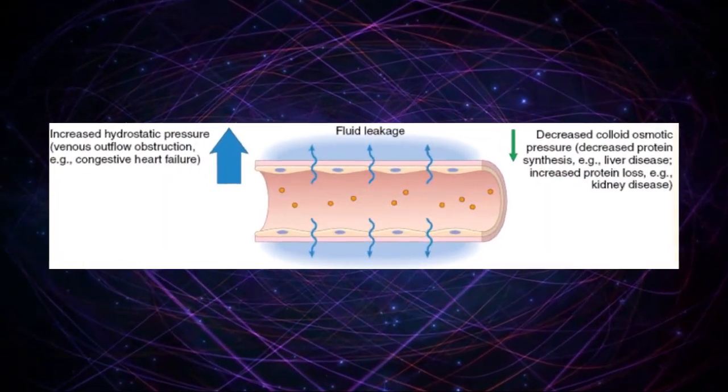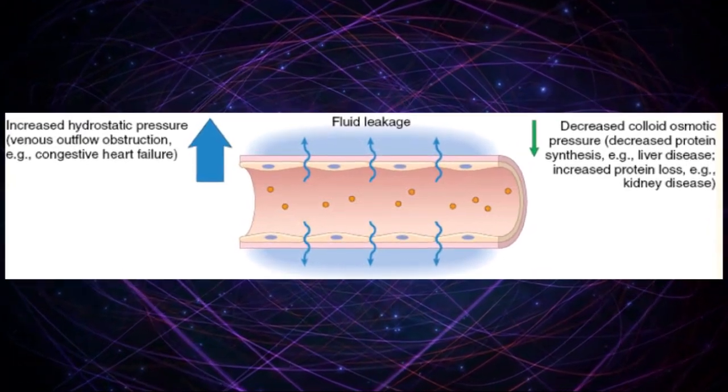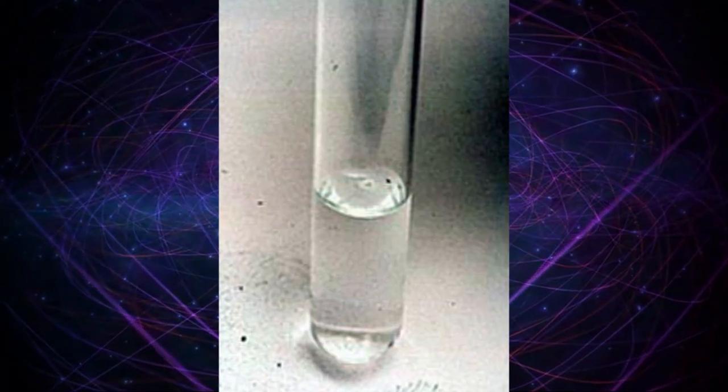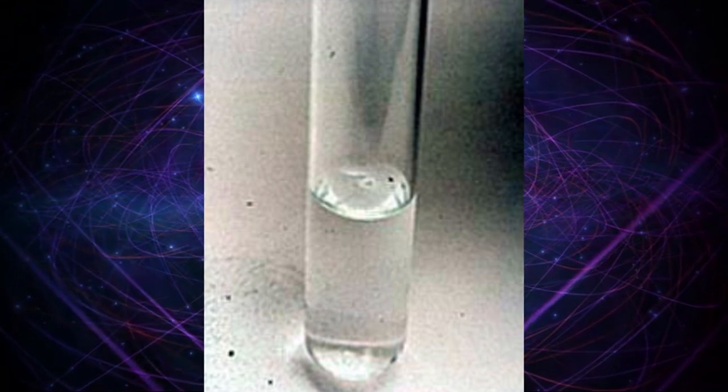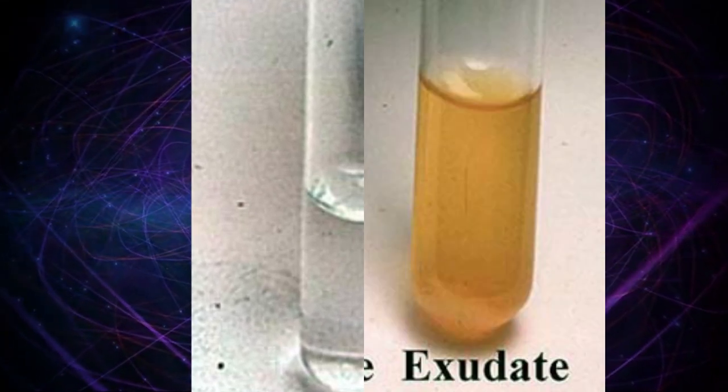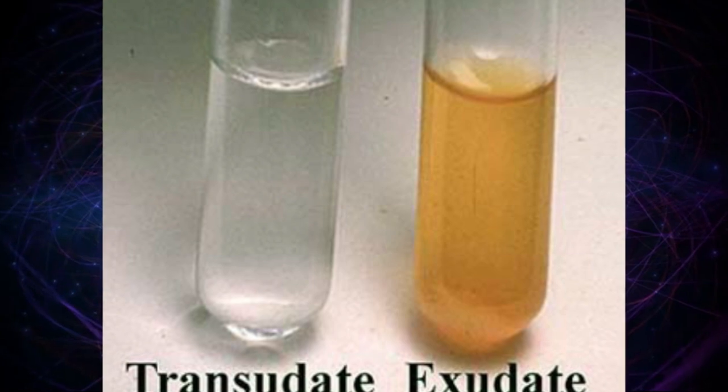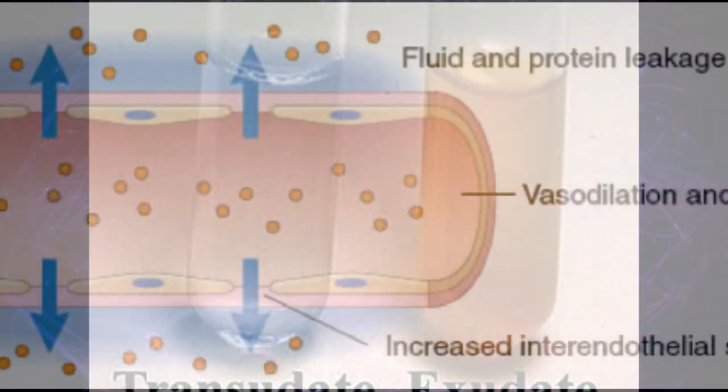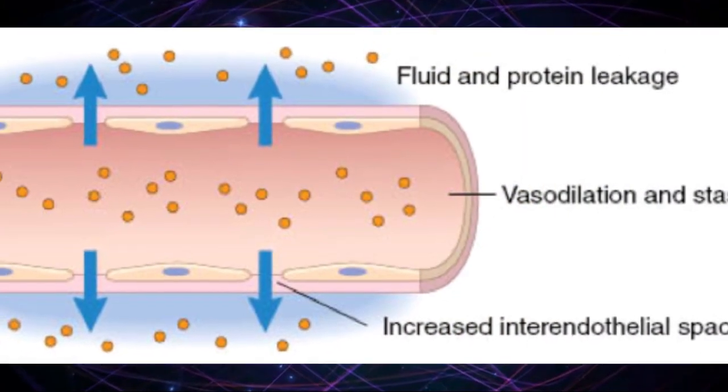Transudate is fluid pushed through the capillary due to high pressure within the capillary, so they are filtrate of plasma without changing vascular permeability. Exudate is fluid that leaks around the cells of the capillaries caused by inflammation associated with increased vascular permeability.